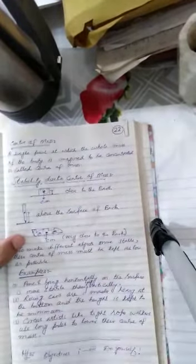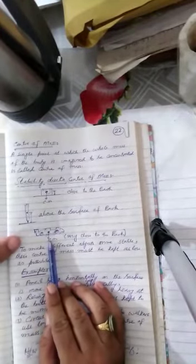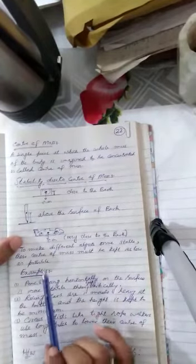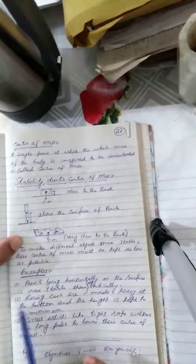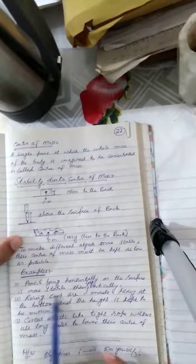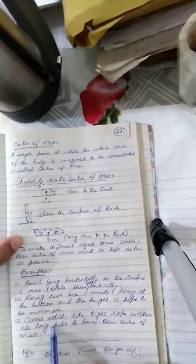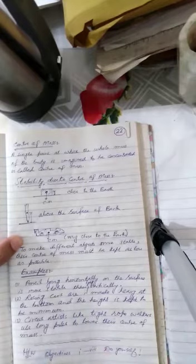So, it means out of all these things, stability of this racing car is much greater than the rest two. Is it clear? So, we have written here different examples which are relevant to center of mass. So, very common examples girls, I have written here. So, you can read out these examples by yourself and think over it.